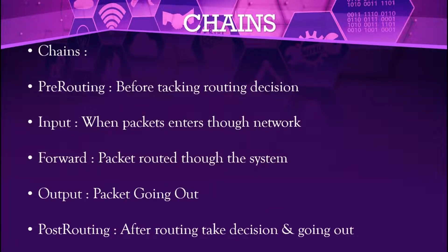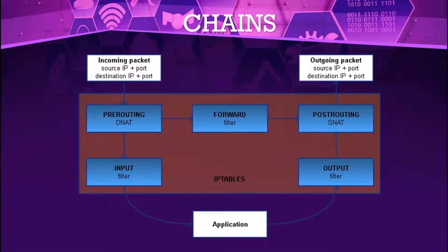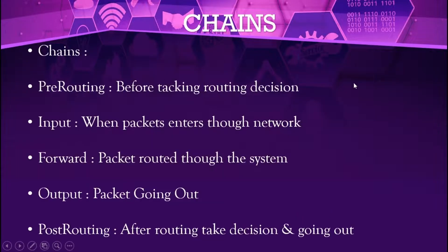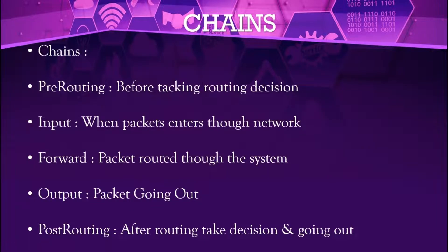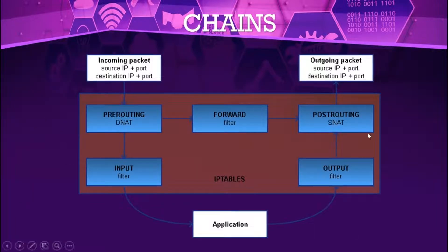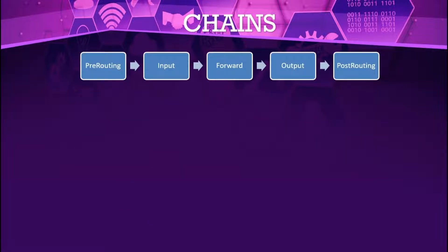Forward means the package comes through the network and we forward it to another network. Output means we have packages that we are going to send to another server — that is called output. Post-routing means we have already decided the destination of the package and we send the packages to that destination. So the chains work in order: pre-routing, input, forward, output, and post-routing.